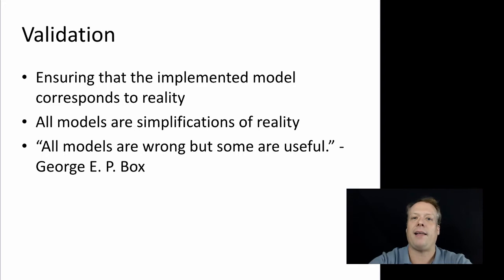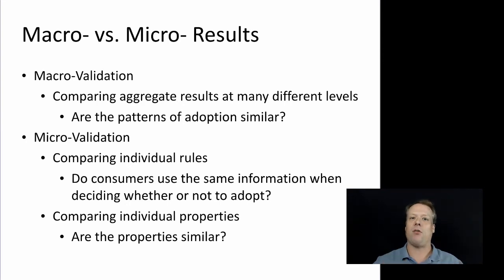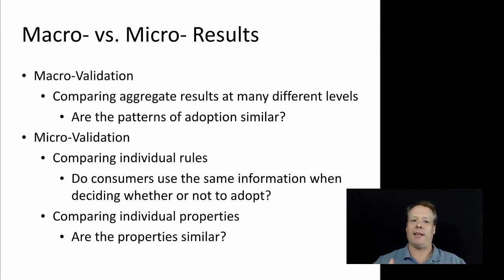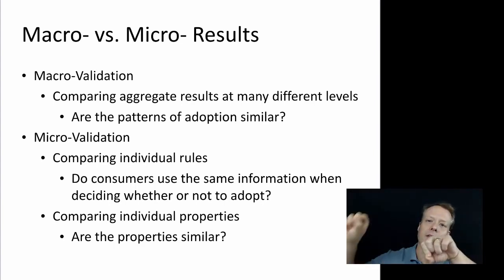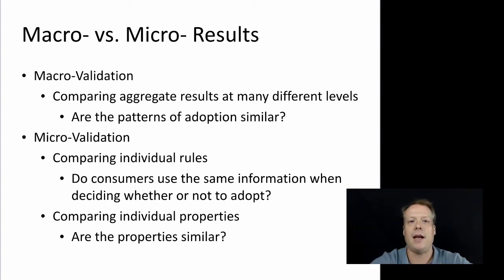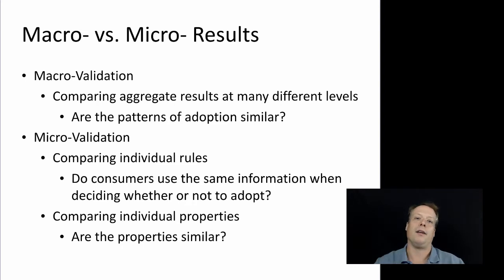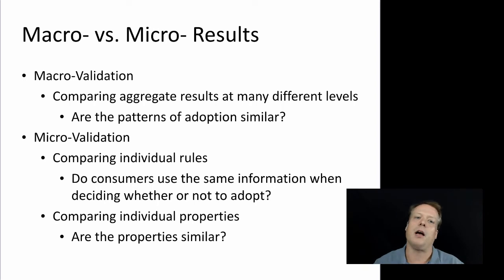When thinking about validation, I like to break it down into related axes. One of those is to think about macro versus micro results or aspects of validation. Macro validation is comparing aggregate results at many different levels. Going back to the diffusion example, are the patterns of adoption that we saw similar? The answer is yes — we see S-shaped curves of adoption of innovations all the time in reality. Some of the standard work by Rogers and Bass has shown that you get early technological adopters, a small group of them, then a big majority in the middle, and then a small group of laggards at the end.